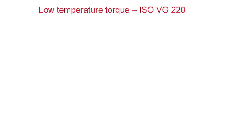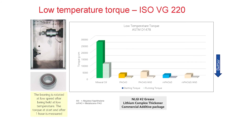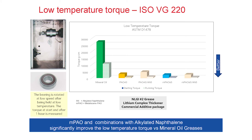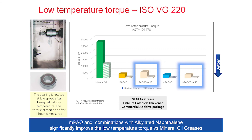Now let's shift to the low-temperature properties of these greases. Looking at the low-temperature torque of the mineral oil, comparing starting and running torque, you see that the starting torque is very high, and it reduces significantly by running for one hour. The low-temperature starting torques of the synthetic greases are far lower and are further reduced when running for one hour. There's also an obvious difference between high-viscosity CPAO and MPAO greases. We know that ANs typically have a negative impact on the low-temperature torque of greases, but when you compare a CPAO-AN blend with an MPAO-AN blend, there's a clear difference — you don't see a negative impact with the MPAO.